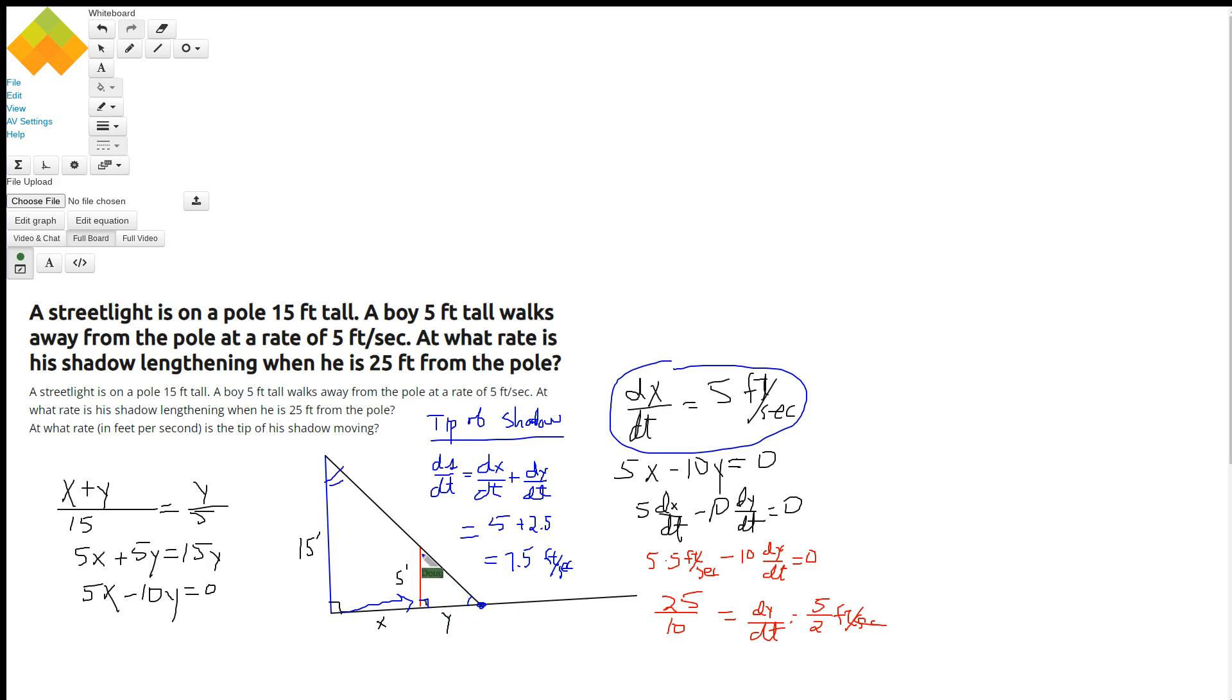So corresponding sides are in proportion. One way to set it up is to say that x plus y, which is the length of this big leg, is to its long leg as this leg is to its other leg. And then if we cross multiply and get the common terms on the same side, this is what we end up with.